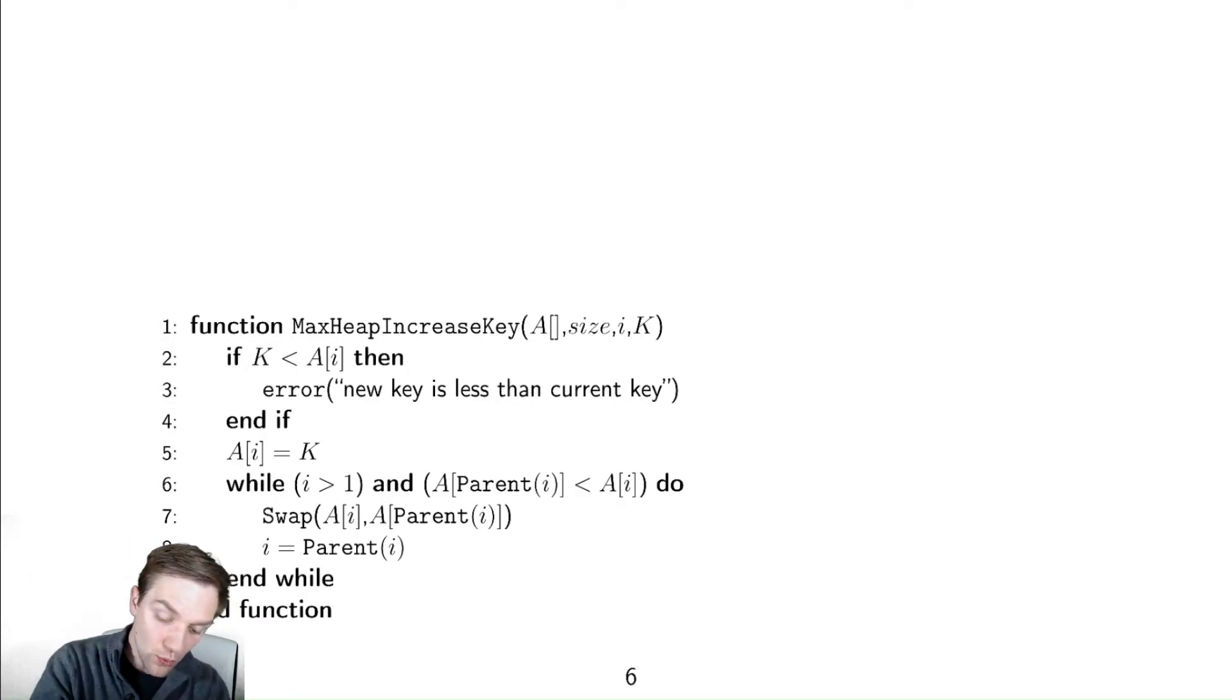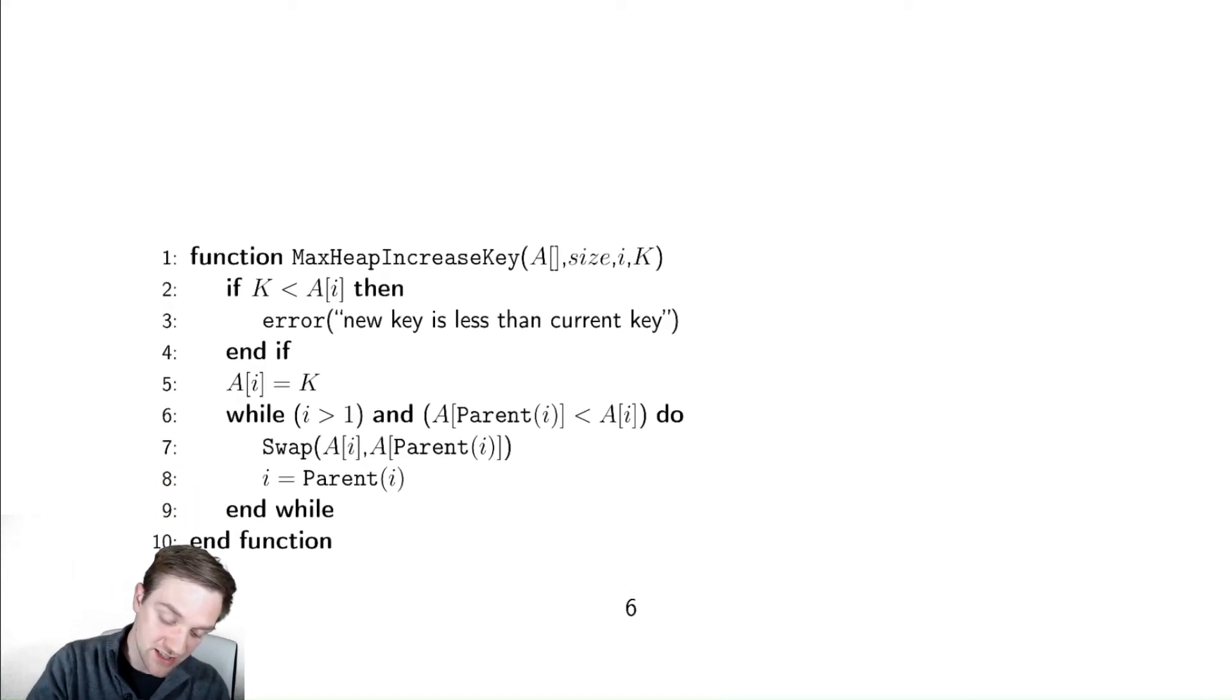So the only difference between this and the code we did for insertion is where we are modifying. So here, rather than changing the size and then adding the element at the end, what we're going to do is take location i and set it equal to our new value k and then perform these swaps.